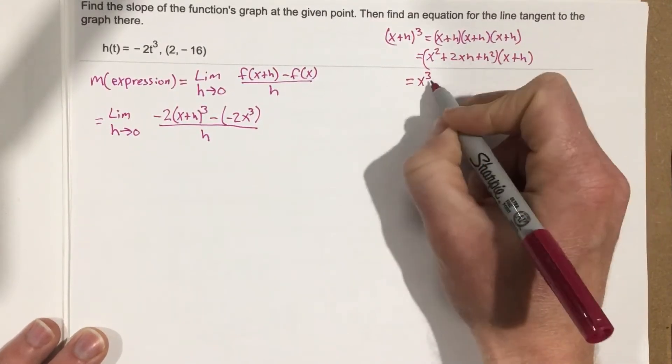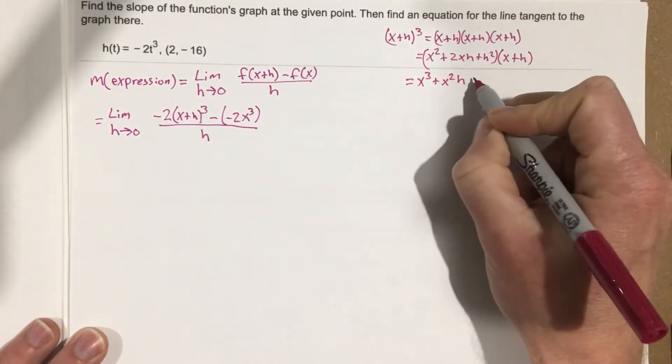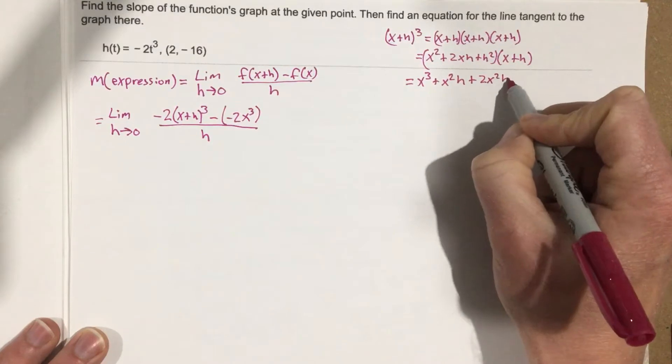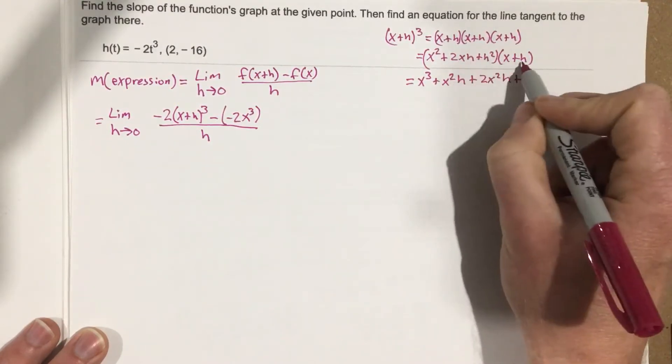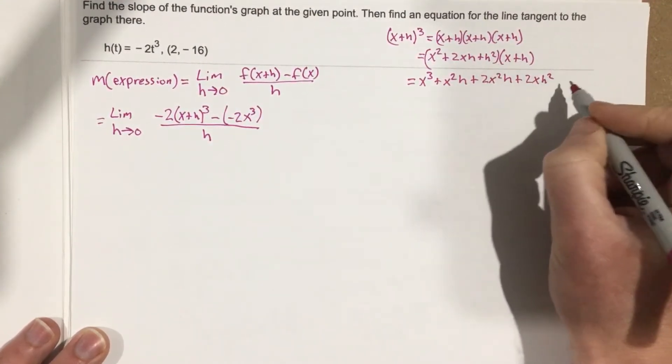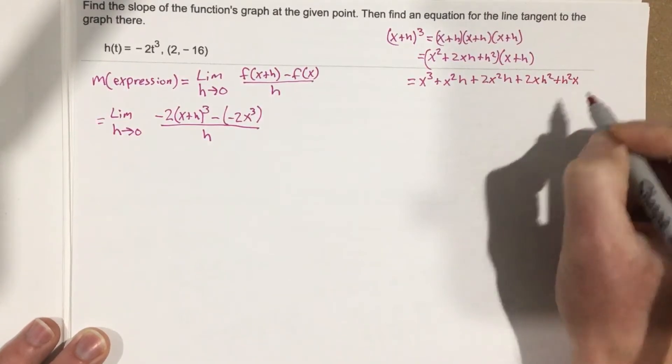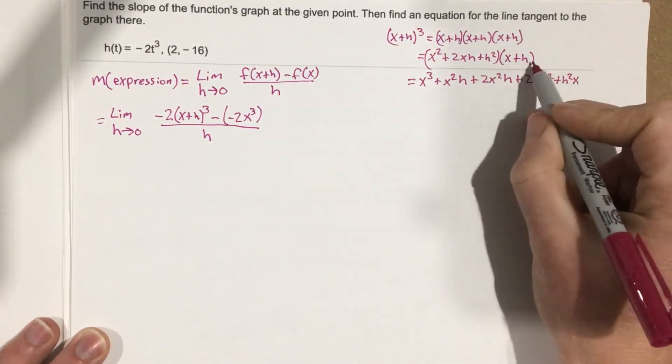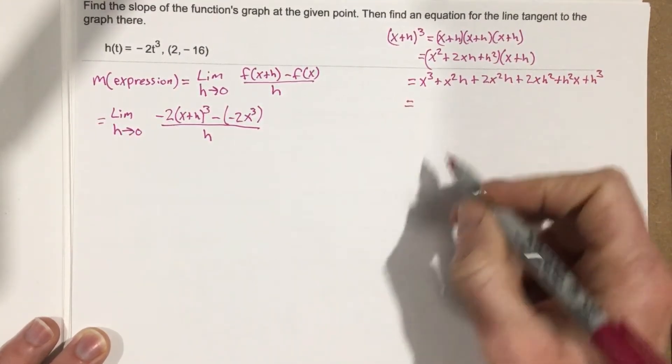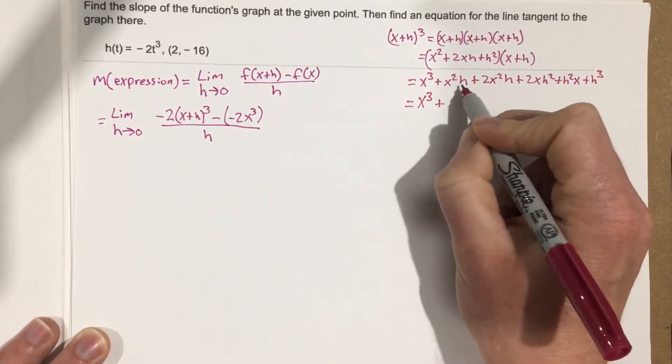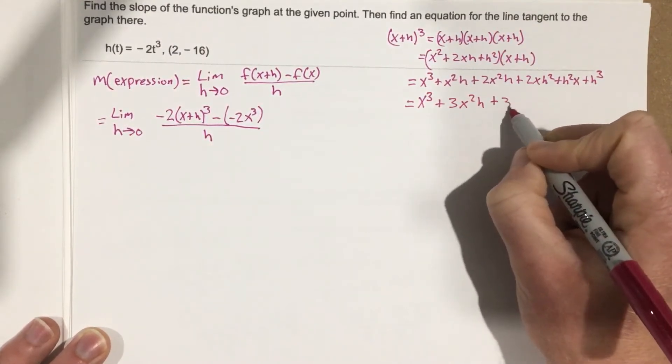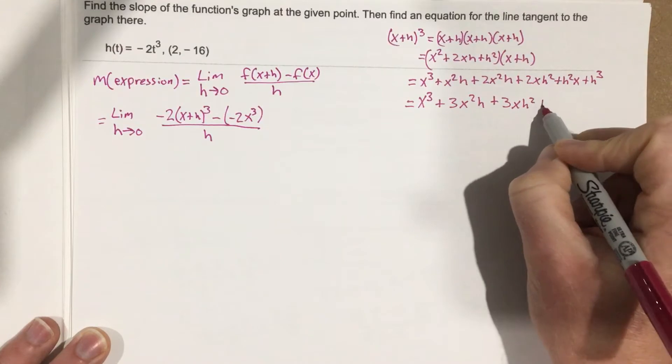Plus 2xh times x is 2x squared h, plus 2xh times h is 2xh squared, h squared times x is plus h squared x, and then h squared times h is plus h cubed. So that's x cubed plus 3x squared h plus 3xh squared plus h cubed.